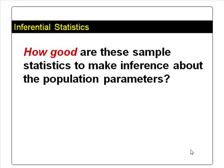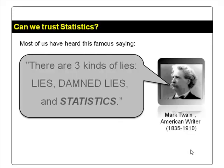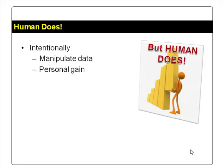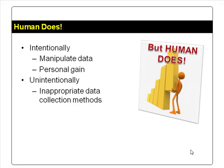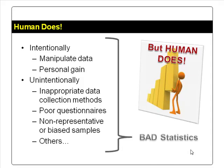The big question is: how good are these sample statistics for making inferences about population parameters? Can we really trust these sample statistics? You must have heard the famous saying attributed to American writer Mark Twain: there are three kinds of lies — lies, damned lies, and statistics. But truly, statistics don't lie. Humans do, either intentionally to manipulate data or for personal gain, or unintentionally due to inappropriate data collection methods, poor question errors, non-representative or biased samples, or other reasons. All these lead to bad statistics.